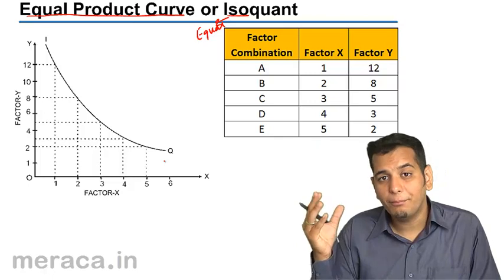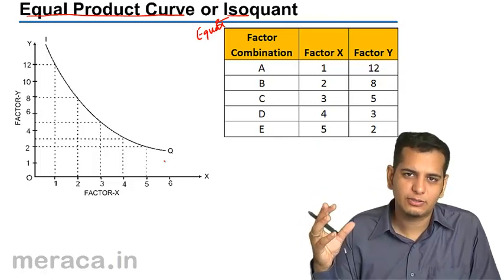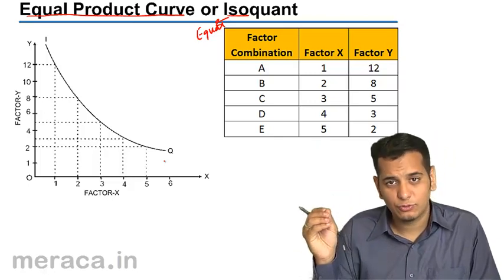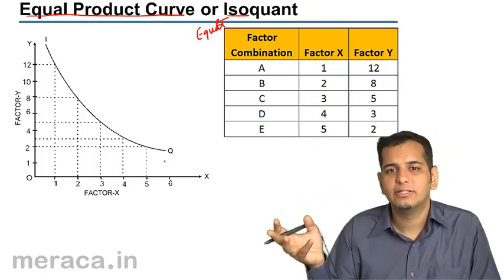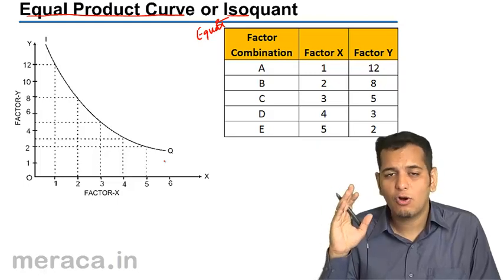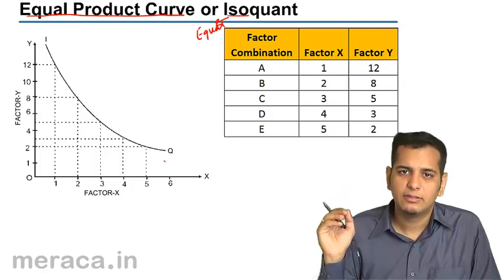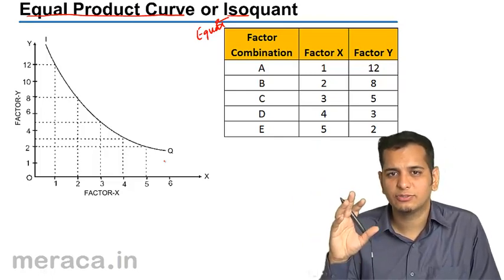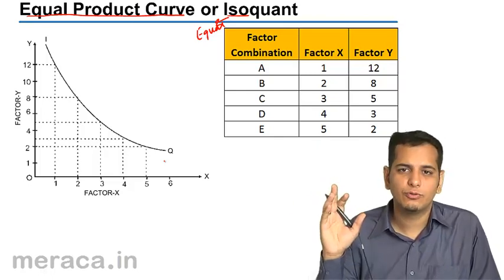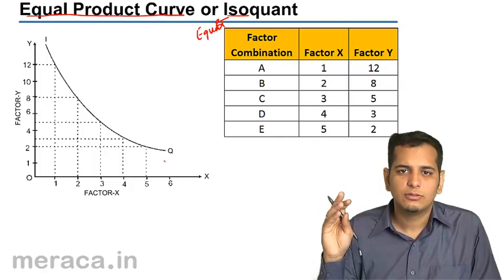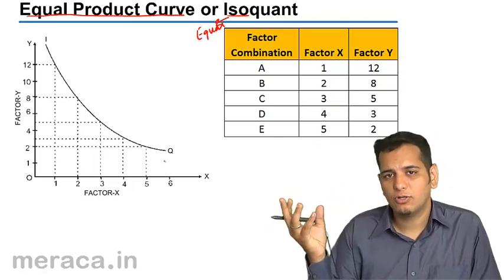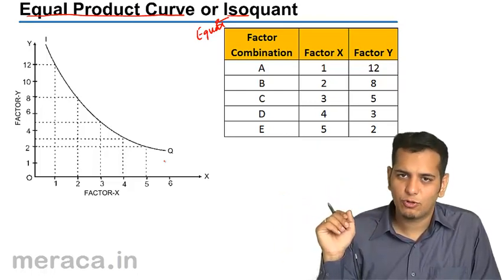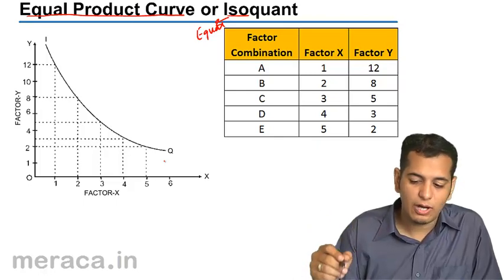For this, the producer uses two things: isoquant curves and isocost lines. The isoquant curves represent the combination of factors of production which give him the same level of output, and the isocost line represents his budget — the cost that he will incur by employing two factors of production. That cost is represented by the isocost line.